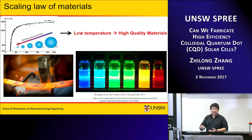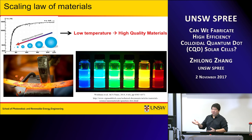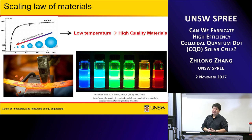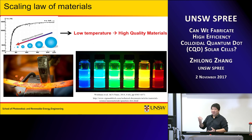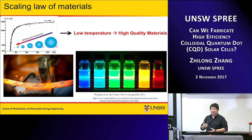When things go down to very small sizes, some very interesting things start to happen. One is the so-called scaling law, which refers to the fact that the melting temperature of a material goes down when it approaches nano size. This means we can fabricate very nice materials at room temperature because of the low melting point, and the energy required to push defects from the interior to the surface is very little. This is why quantum dots usually have very good crystal quality and very high photoluminescence quantum yield.